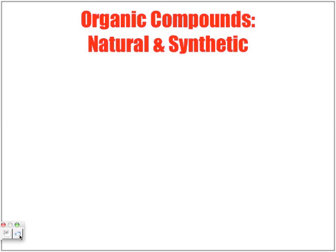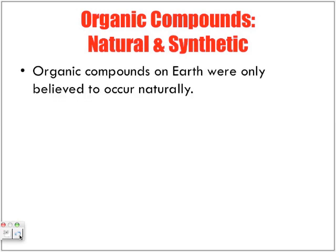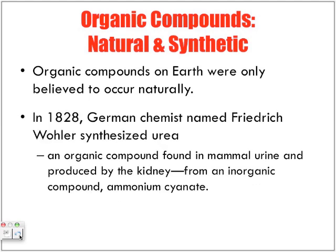Organic compounds can be natural and synthetic. It was originally believed that all organic compounds were natural, but ultimately it was found that we can, in fact, synthesize organic compounds. German scientist Friedrich Wöhler, in 1828, synthesized urea, an organic compound found in mammal urine and produced by the kidneys.